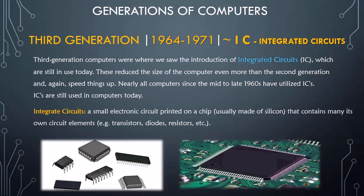ICs are still used in computers today. An integrated circuit is a small electronic circuit printed on a chip, usually made of silicon, that contains many circuit elements — for instance, transistors, diodes, and resistors.